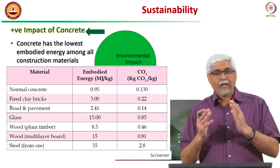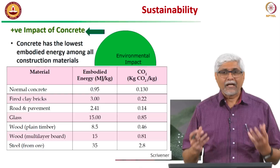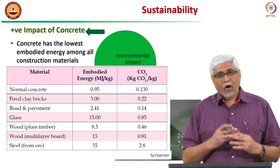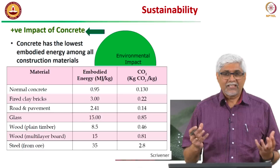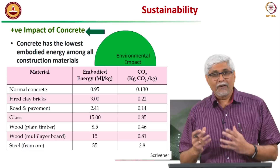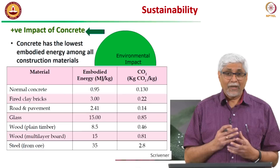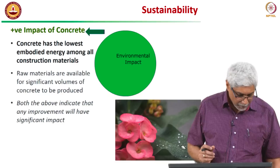Embodied energy is the energy required to manufacture 1 kilogram of a material. CO2 emissions are the greenhouse gases given out during the production of that material, and concrete does very well in both these aspects of environmental impact. However, comparing unit mass is not always right — to make a structure you will not use the same mass of different materials, so you have to multiply by unit factors to get the embodied energy and CO2 emissions for an equivalent structure.